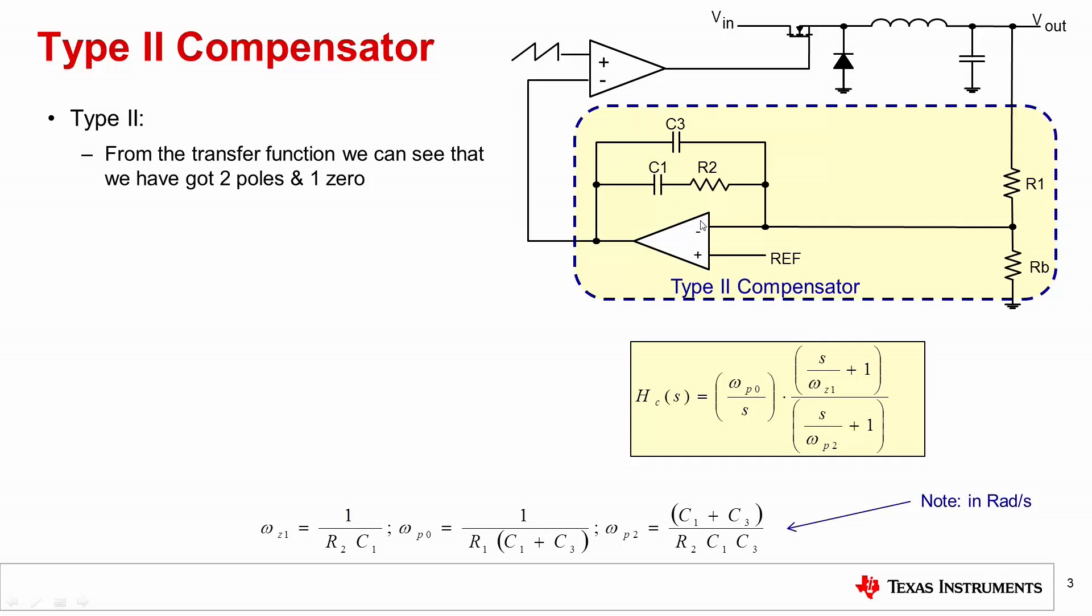You can see that we've got a transfer function and within this transfer function I have got two poles. Here is my first pole. It's a pole at origin. I've got my second pole which I get to place in order to meet the stability criteria. And I have got a zero and again I get to place that where I want in order to meet the stability criteria. At school we study the impact of poles and zeros in detail so that we can relate this into reality and design a compensator.